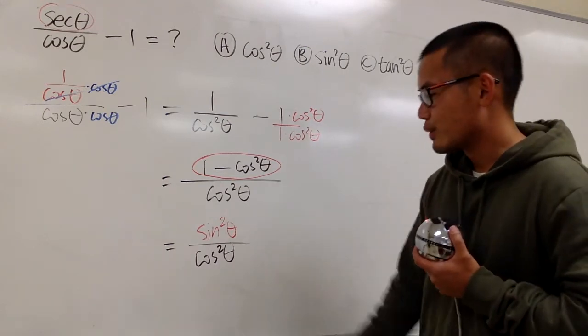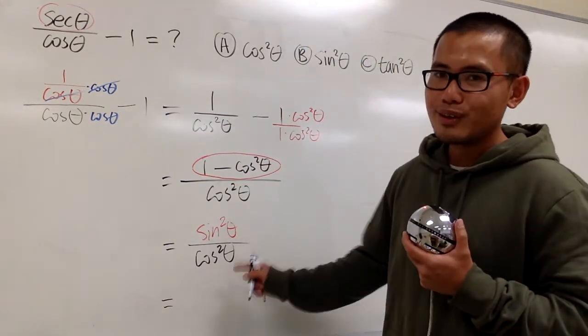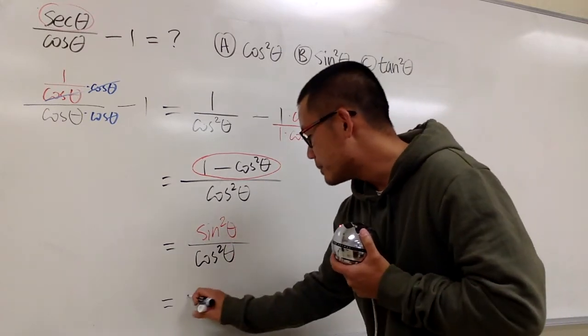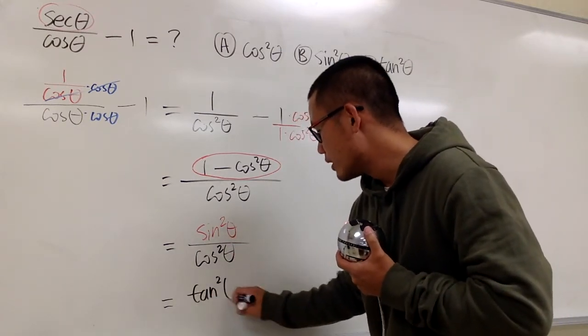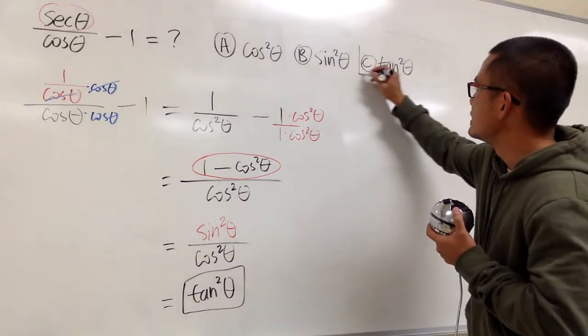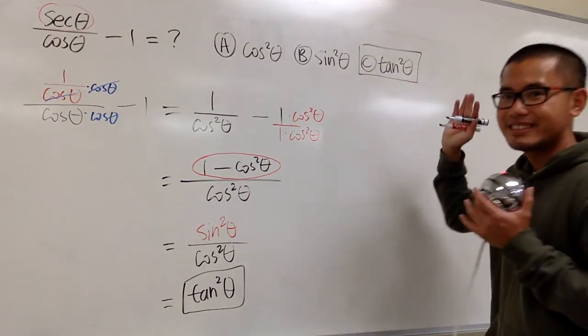At the end, what's this? Well, we know sine over cosine is tangent, but this is sine squared over cosine squared. Namely, we will have tangent squared, and the input is theta. So this is what we have, and that's answer choice C right here. That's it.